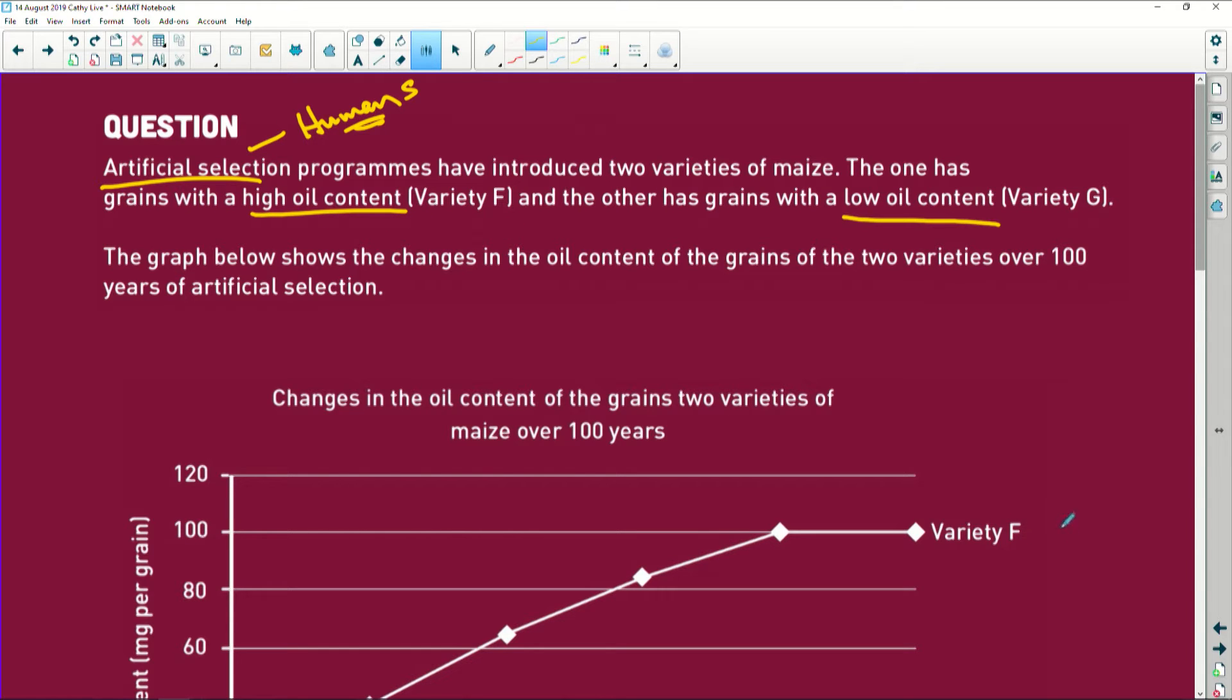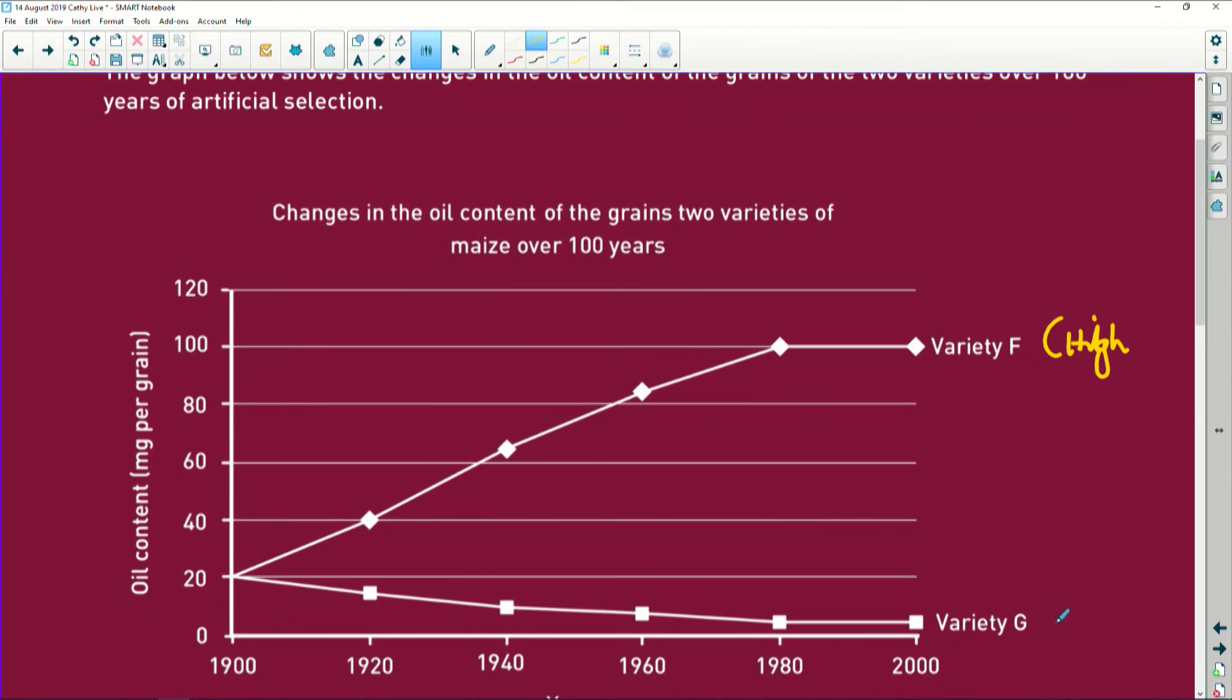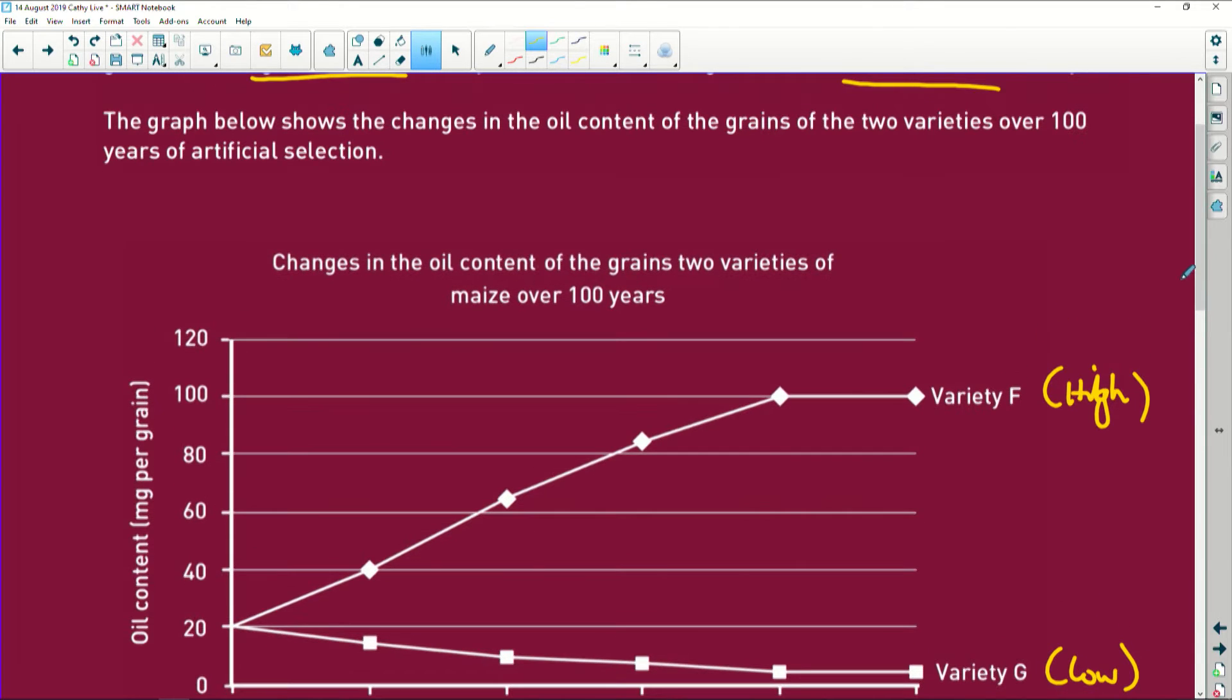So F is high, so just write that here, F is high, and let's look at our graph here, and G is going to be low, alright? And then they say here, the graph below shows the change in the oil content of grains, the two varieties, over 100 years.